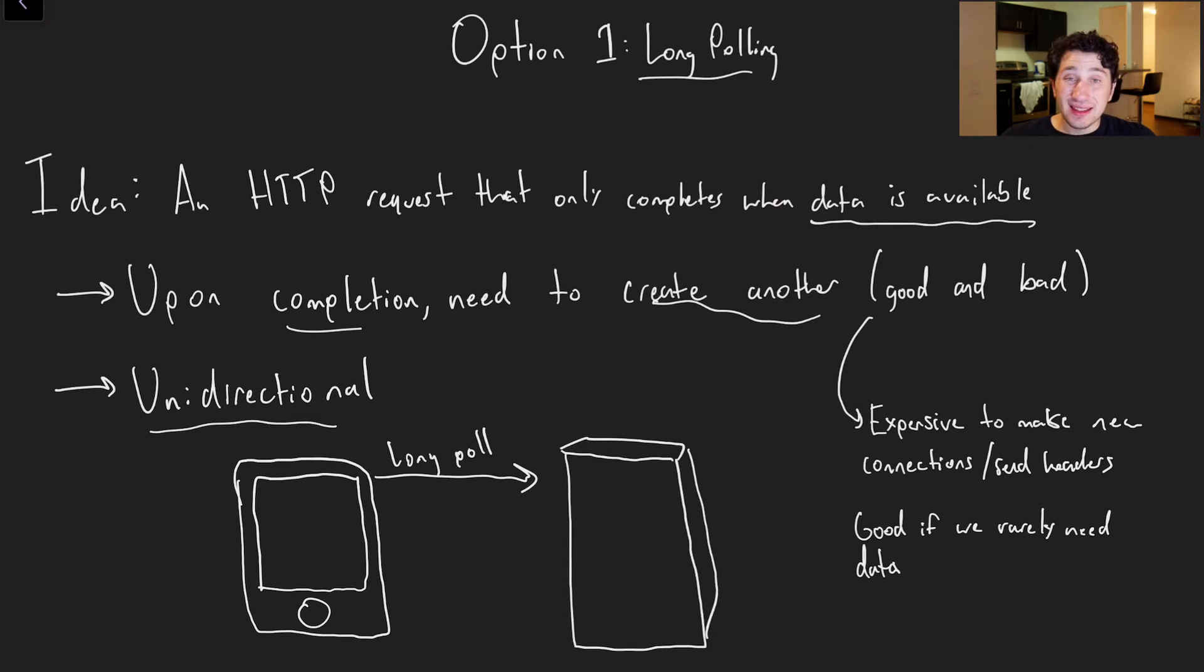So this can be potentially good and a bad thing that you basically have to restart these connections all the time. For starters, it's kind of expensive, right? Because every single time that we initiate a long poll, we have to send over a bunch of headers that get involved in HTTP requests. Additionally, creating connections on the server is expensive. We need to allocate a port, things like that.